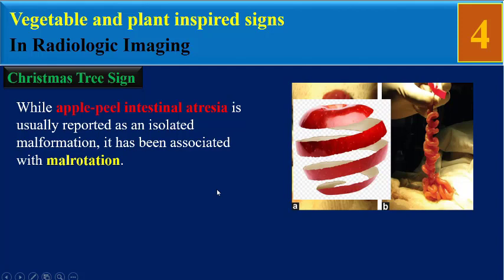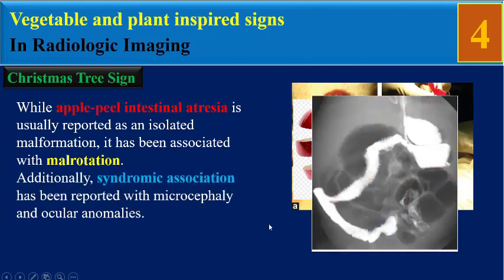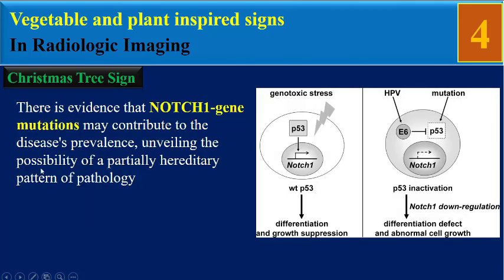While apple peel intestinal atresia is usually reported as an isolated malformation, it has been associated with malrotation. Additionally, a chromosomal association has been reported with microcephaly and ocular anomalies. There is evidence that MYH1 gene mutation may contribute to the pathogenesis, unveiling the possibility of a partially hereditary pattern of this pathology.